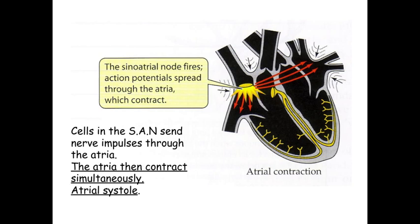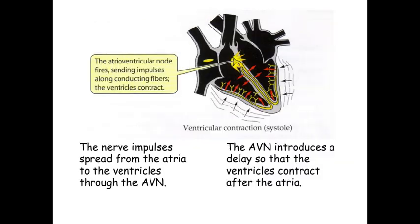Once that has happened, the wave of excitation is sent to the AVN. What happens at the AVN is there is a short delay in this nerve impulse being sent any further. It's really important that we have this short delay within the wave of excitation, because we need time to allow the atria to empty of blood and force it into the ventricles. If there wasn't a delay at the AVN, there wouldn't be enough time for the blood to enter the ventricles, and the pumping of blood around the heart would not be efficient.